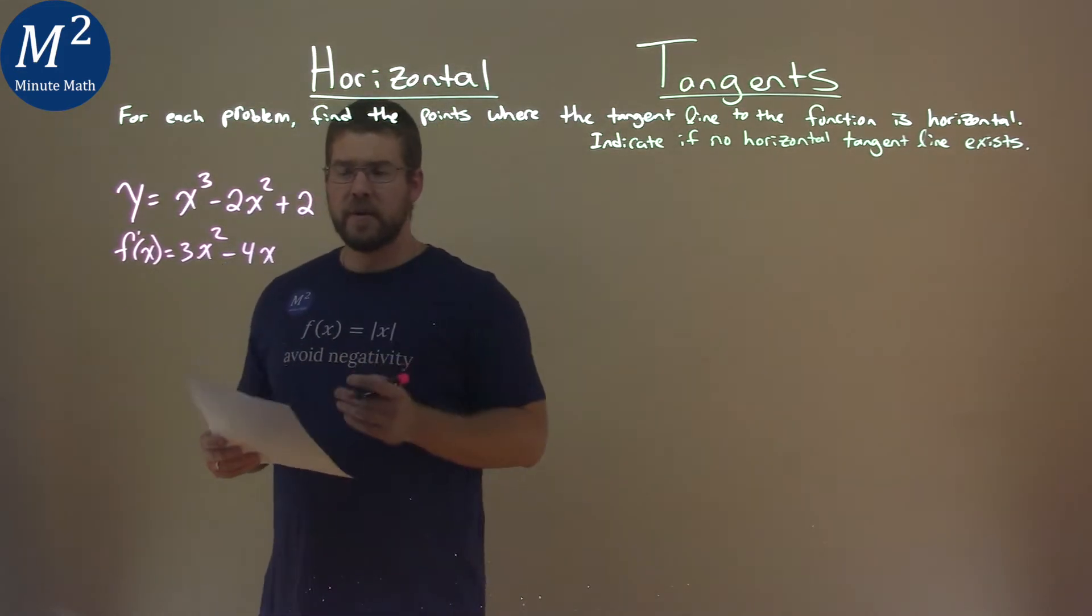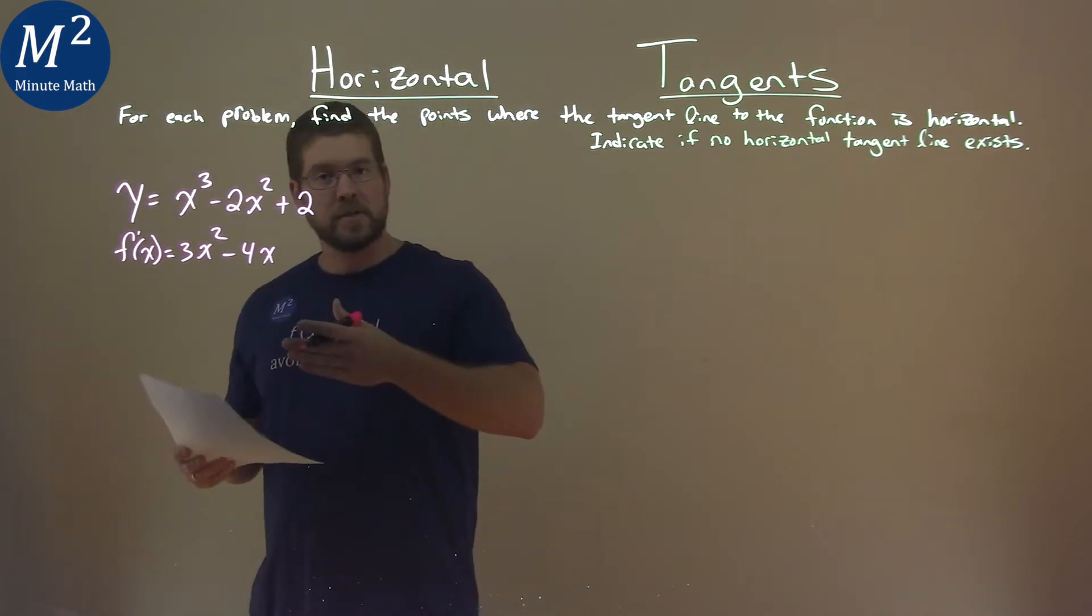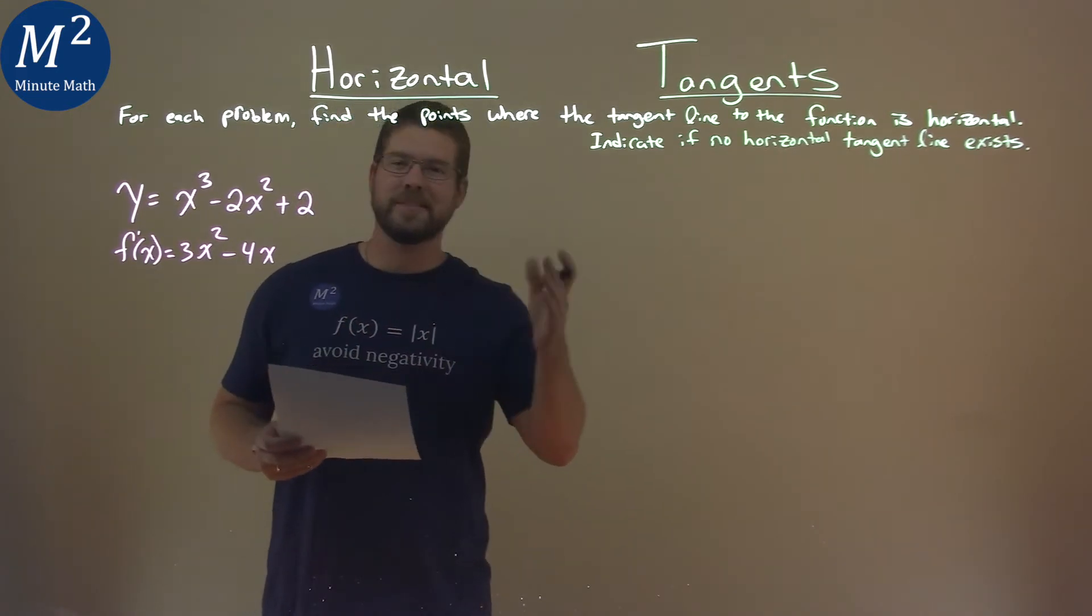We quickly found our derivative, and we need to find where this derivative is equal to 0, finding where the tangent line slope is equal to 0.